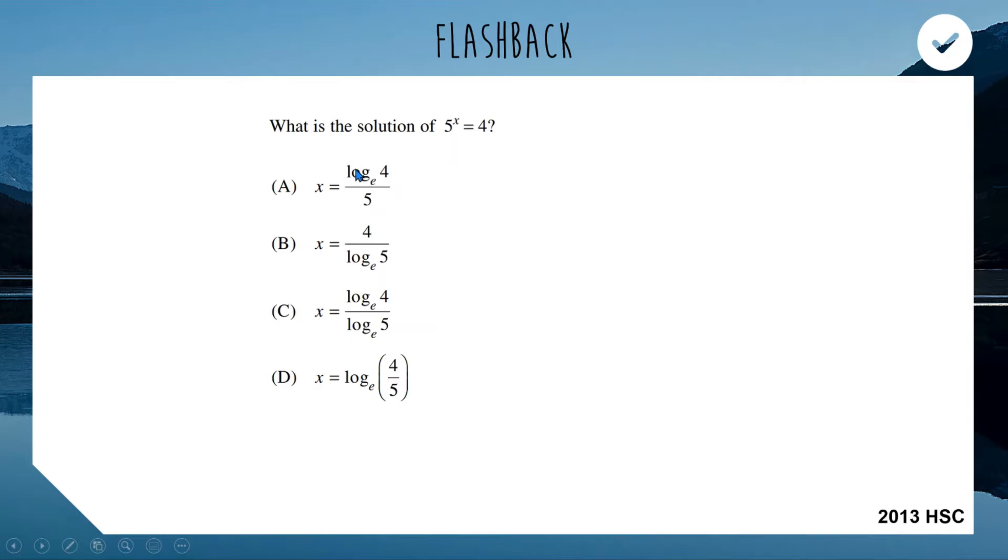What I'm noticing about all four options is they all involve logarithm with a base of e. That tells me my first step in solving this equation to get x as the subject is to take a logarithm of both sides. Instead of taking a logarithm of base 5, we can take a logarithm of base e because that's what all our answers are indicating.